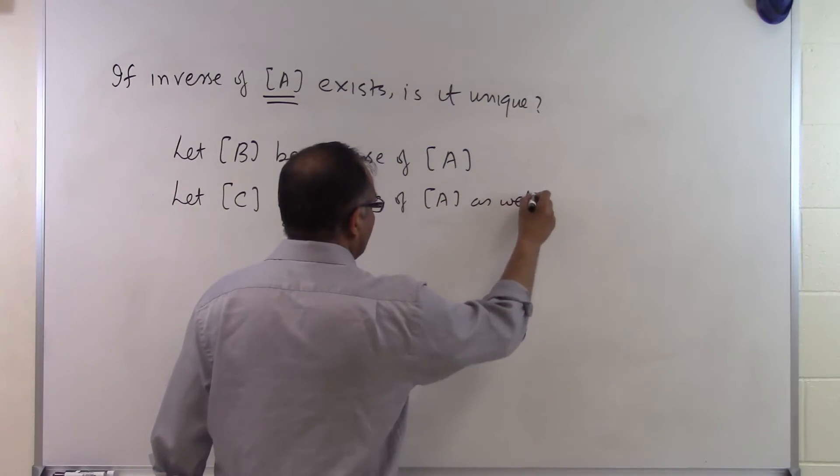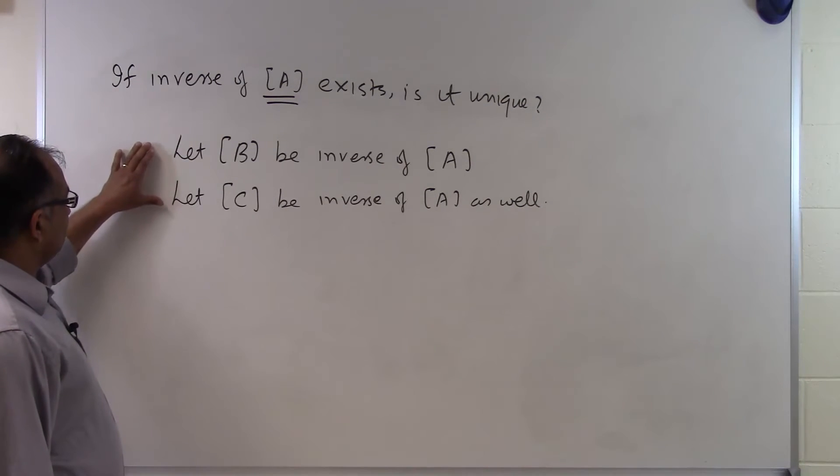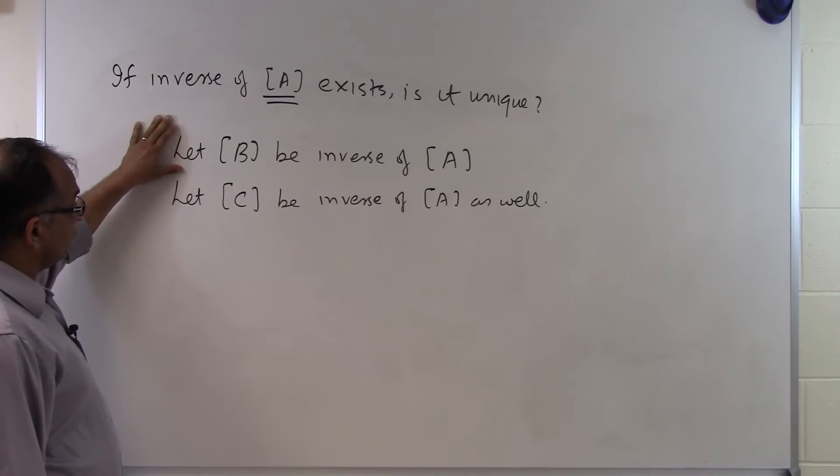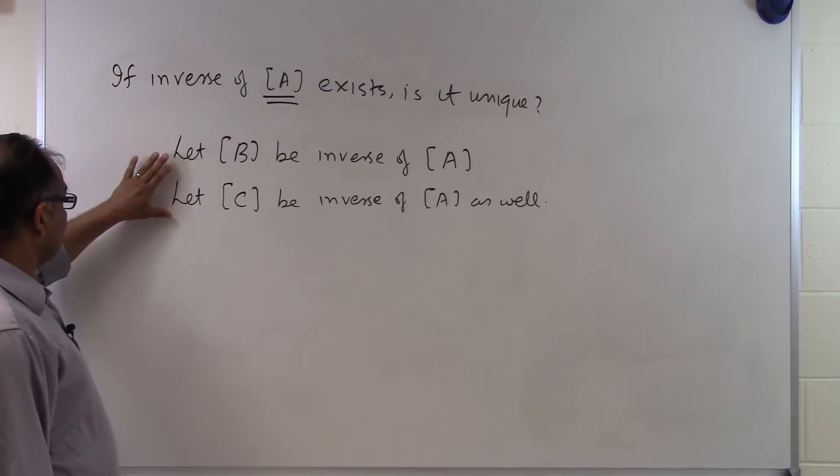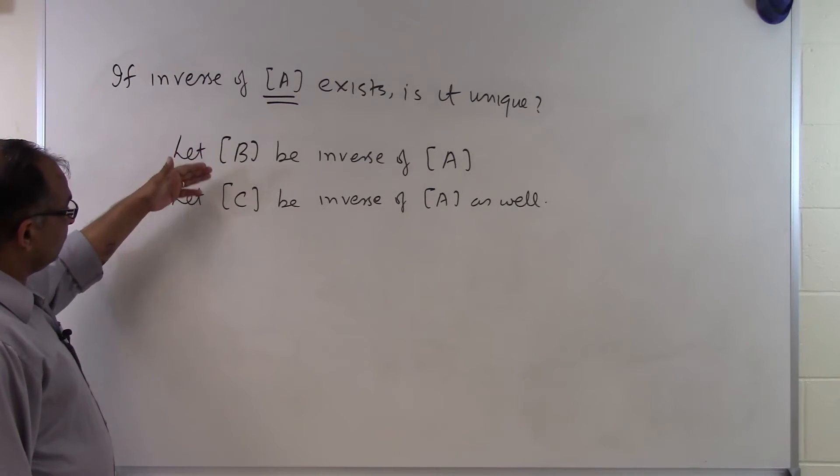What that means is we are doing this by contradiction. We are saying that B is unique, but if B is not unique then there should be another matrix C which should be also inverse of A. And the way to show whether B is unique or not is by showing that B and C are the same.